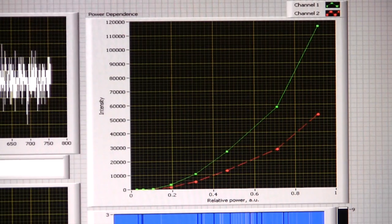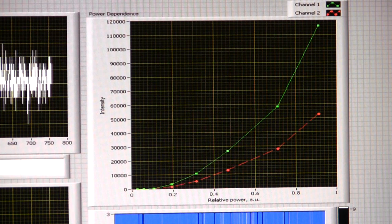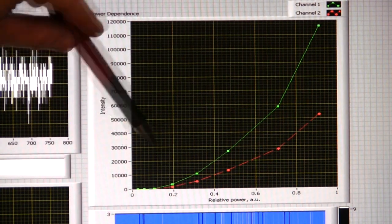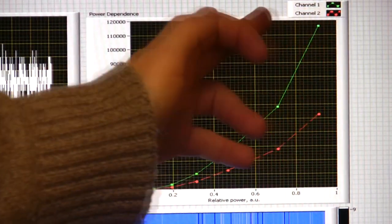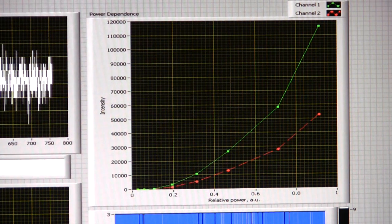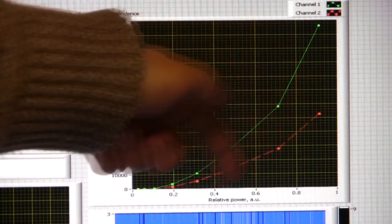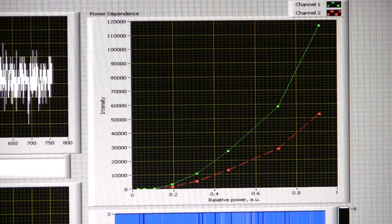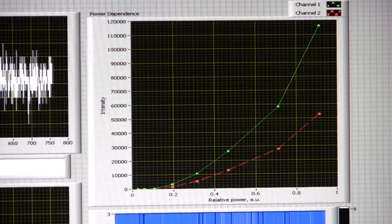To be sure that we are dealing with two photon absorption we measure power dependence at selected wavelengths, and this power dependence is shown on this graph. So we go with first higher power and measure fluorescence signal at this power, and then the filter wheel turns slightly and the second point is being measured at lower power, and so on for about eight different points. And we can see that those are kind of quadratic dependencies of the fluorescence intensity versus power, which says that it is a two photon absorption.